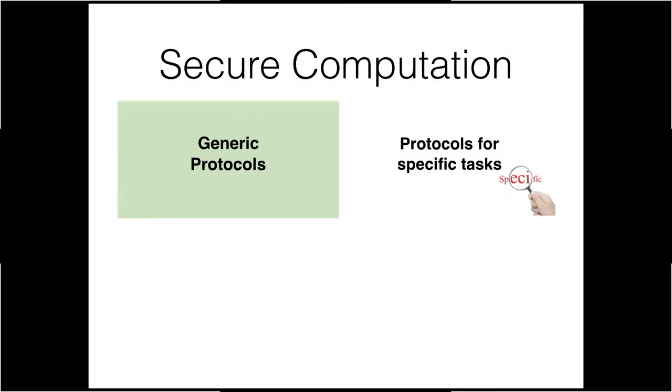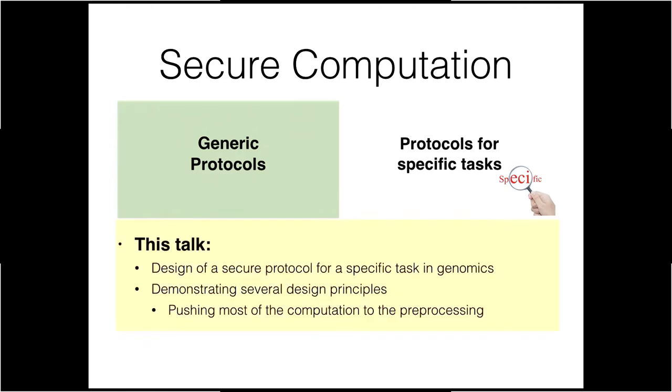In secure computation, we distinguish between generic protocols — techniques that, given some function, provide generic ways to solve it securely — and protocols for specific tasks. Unfortunately, generic techniques do not scale for large inputs. For specific tasks, we study the problem, utilize the application domain, and come up with very fast solutions. In this talk, we are going to design a secure protocol for a specific task in genomics.